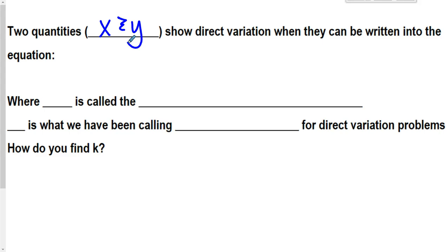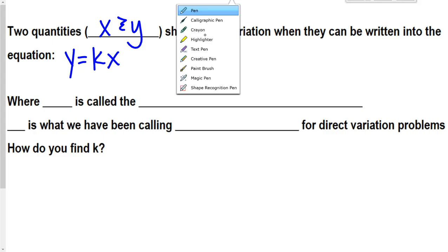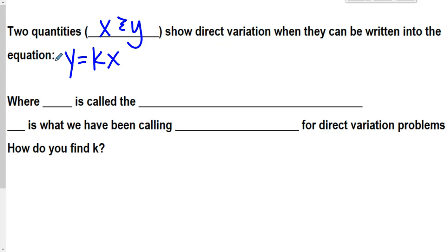Two quantities show direct variation when they can be written as y is equal to kx. This is extremely important, so I am actually going to highlight this in my notes: y equals kx. We are going to write this down later on too, but it's extremely important.